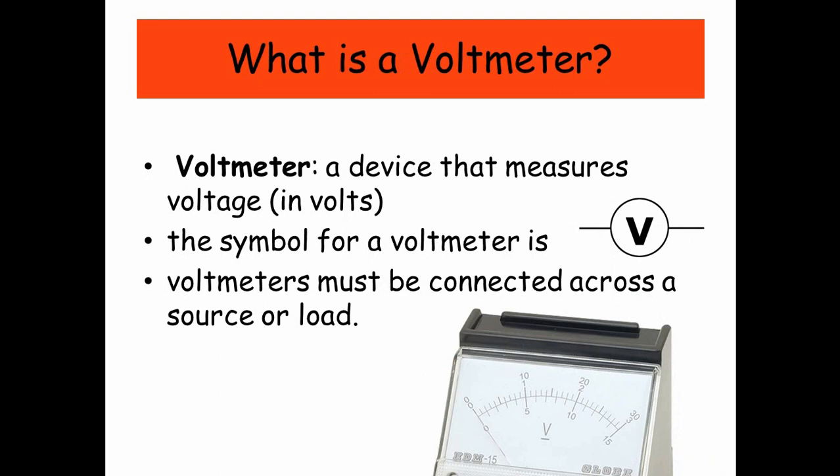So what about voltmeters? A voltmeter is a device that measures voltage, measured in volts. The symbol for a voltmeter is a V inside a circle. Voltmeters must be connected across a source or a load.